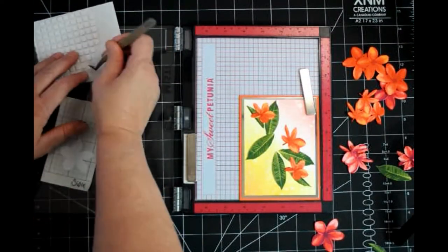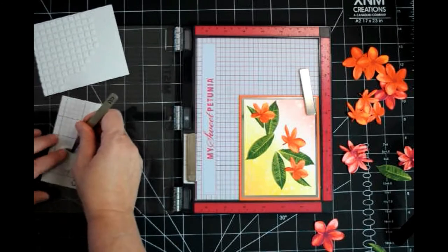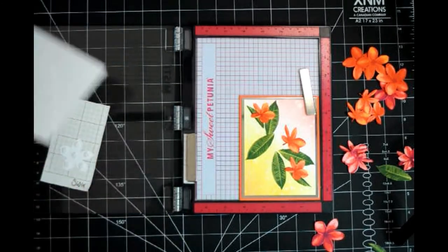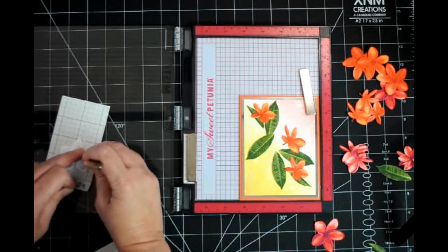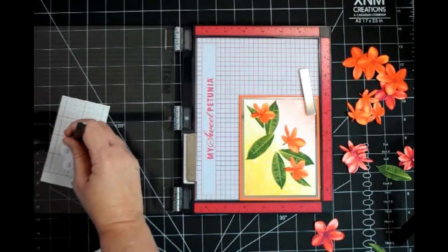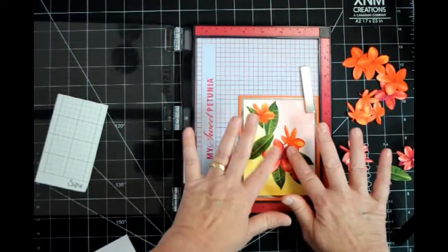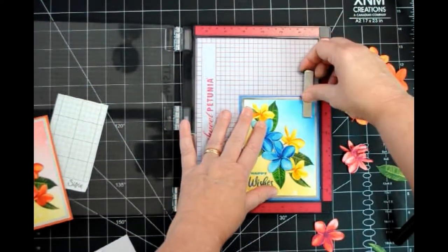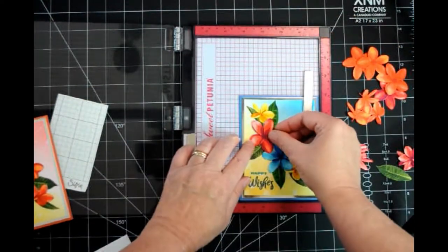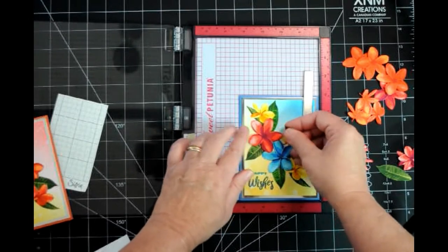Instead of adhering the large flowers with score tape, I'm using the same one millimeter thick pop dots that I used on the blue and yellow card just for a little added dimension. Ah, the last and final flower.